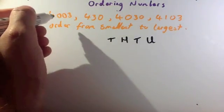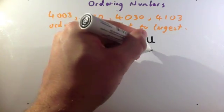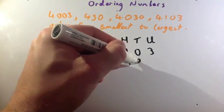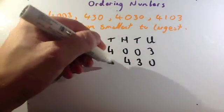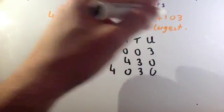So, let's start off with 4,003. You've got 430, so 430, 4,030, and 4,103.